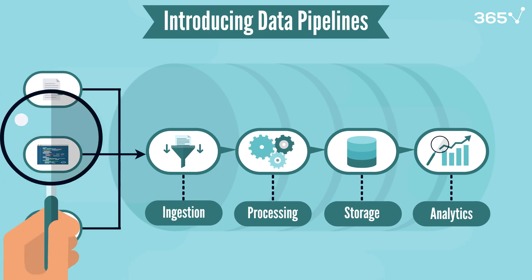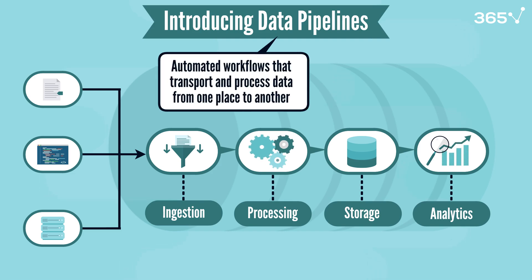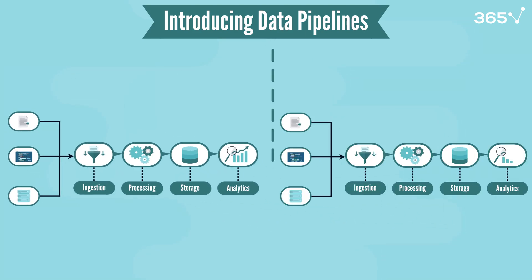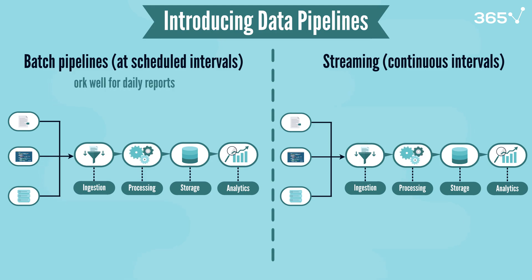Let's take a closer look at data pipelines. These are automated workflows that transport and process data from one place to another. Similar to incoming data flows, pipelines are also of two types, segregated by the data they are ingesting. Batch pipelines handle large data sets at scheduled intervals, and streaming pipelines process data continuously in real-time. Batch pipelines work well for daily reports, while streaming is critical for applications like monitoring IoT devices, where instant real-time responses are important.